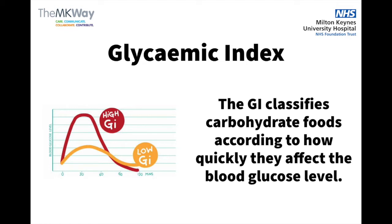Lower GI foods are digested more slowly, hence your blood sugars rise gradually. GI is usually described as high, medium, or low.